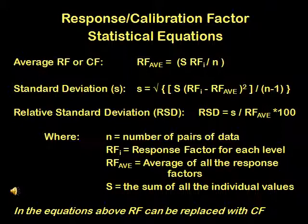The three important factors needed to calculate unknown concentration are average response factor or calibration factor, standard deviation, and relative standard deviation, which usually has a specific method criteria to be met.